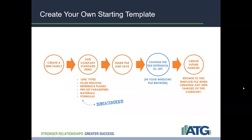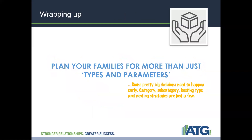Subcategories set up ahead of time are great. Reference planes and dimensions set up ahead of time are great. Remember it's not just about types and parameters — there are some pretty big decisions that need to happen early: setting the category correctly, setting subcategories correctly, especially setting your hosting type since you can't change that easily later, and if you're pulling families together pay attention to whether they're shared or not so you can schedule correctly.